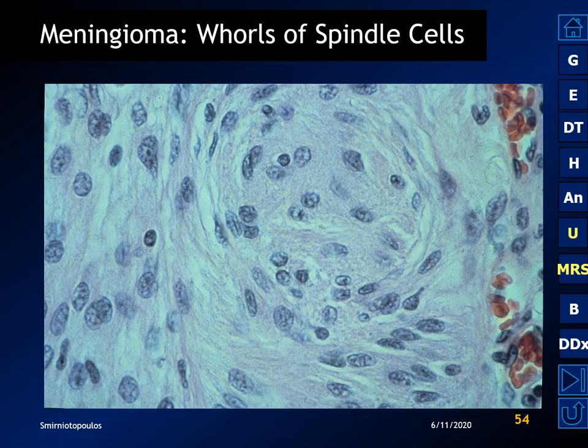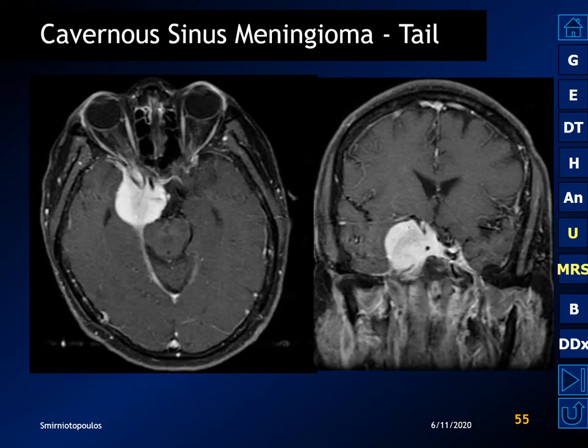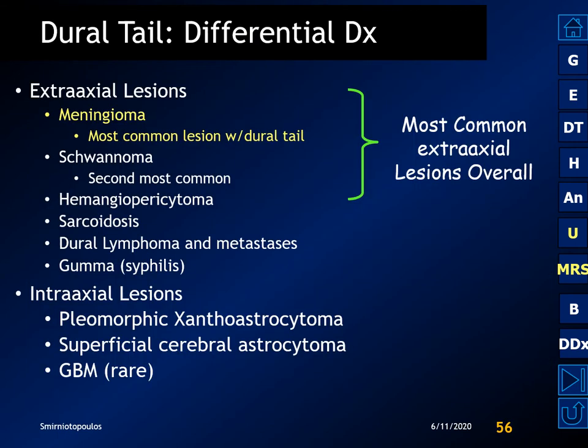Meningiomas are composed of whorls of spindle cells. This cavernous sinus meningioma shows extensive linear enhancement along the edge of the tentorium. When we see a dural tail, the differential diagnosis begins with meningioma, but it can be seen with any dural-based tumor and may or may not reflect neoplastic infiltration, since it can also be a reactive change.